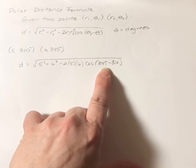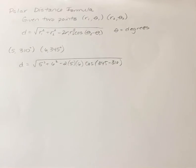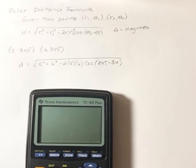345 minus 310 is 35. Cosine of 35 is not a nice number. So I'm going to use the calculator.